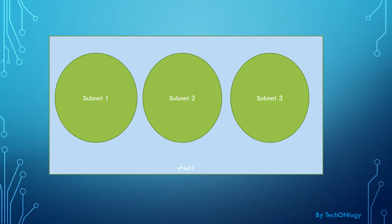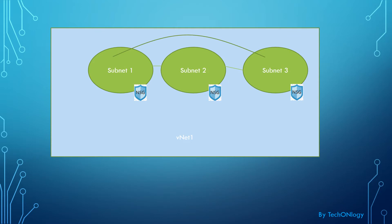Within a VNet we can have subsequent subnets — as the diagram shows, Subnet 1, 2, and 3 — each with their own IP ranges within the wider VNet address space. By default, connectivity between subnets is open; they have their own UDR set up, so any resource on Subnet 1 will automatically communicate with Subnet 2 and 3. If you want to restrict that, you can apply Network Security Groups (NSGs), which are assigned either at the subnet level or at the NIC level.